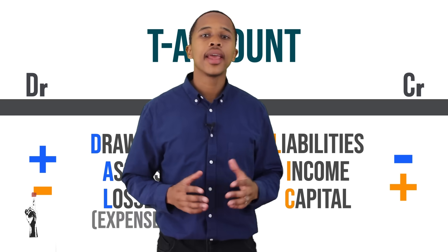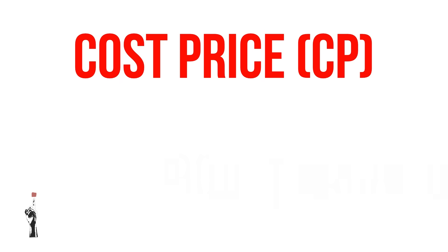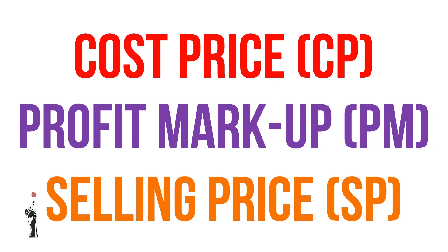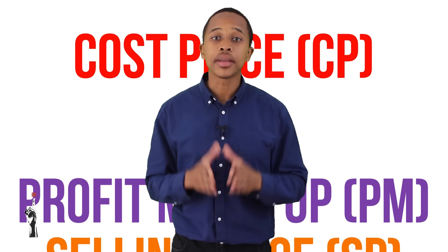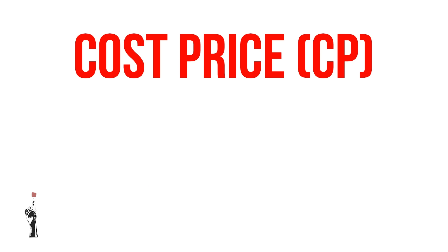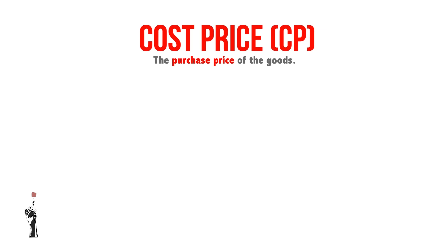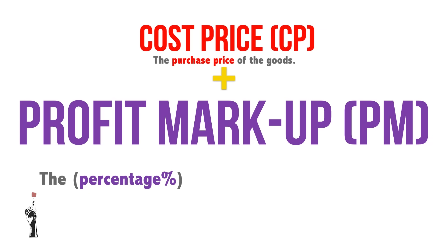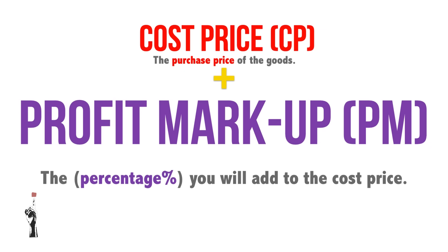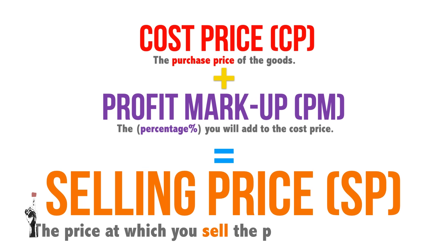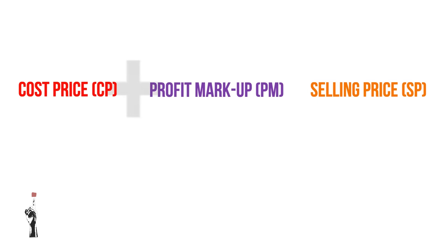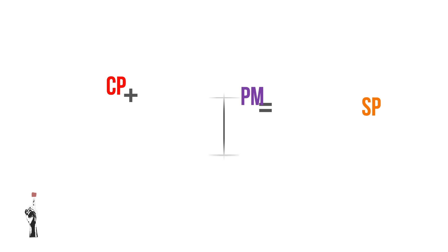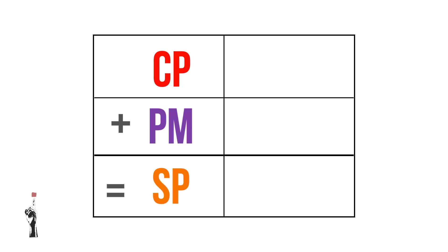Next, I will explain how to calculate the cost price, the profit markup, and the selling price for a trading business. Cost price is the price that you bought the goods for — that's the purchase price. Profit margin is the percentage you add to the cost price. Selling price is the price at which you sell the product to your customers. So: cost price plus profit margin equals the selling price. I always use a grid to make these calculations easier.